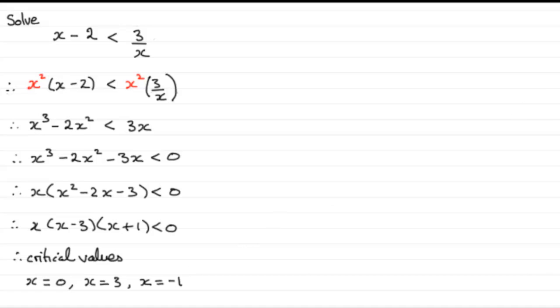Alright, now what we would do is we would draw a graph, a sketch graph of y equals say x cubed minus 2x squared minus 3x, knowing that these critical values are the points where that graph crosses the x axis. So we'll just sketch it over here. So we have our x axis, our y axis.